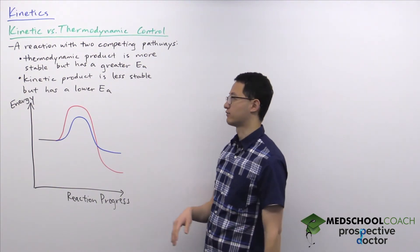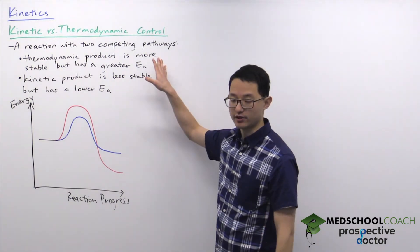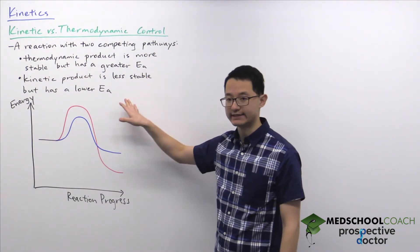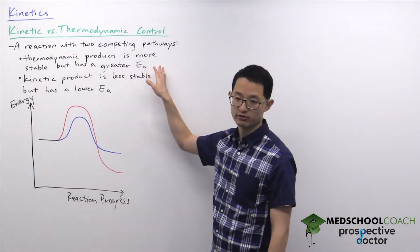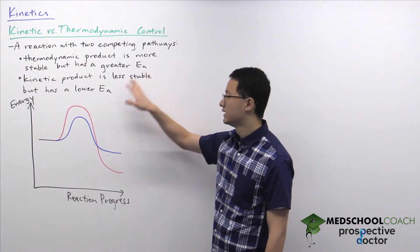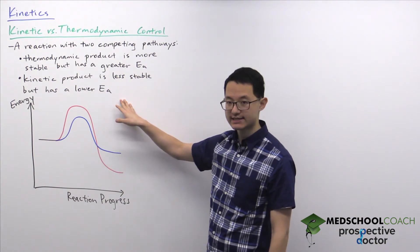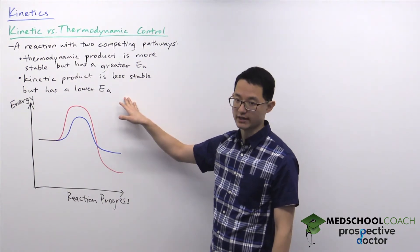Specifically, the two competing pathways must have what is called a thermodynamic product and a kinetic product. The thermodynamic product is more stable but has a greater activation energy. The kinetic product is less stable but has a lower activation energy.